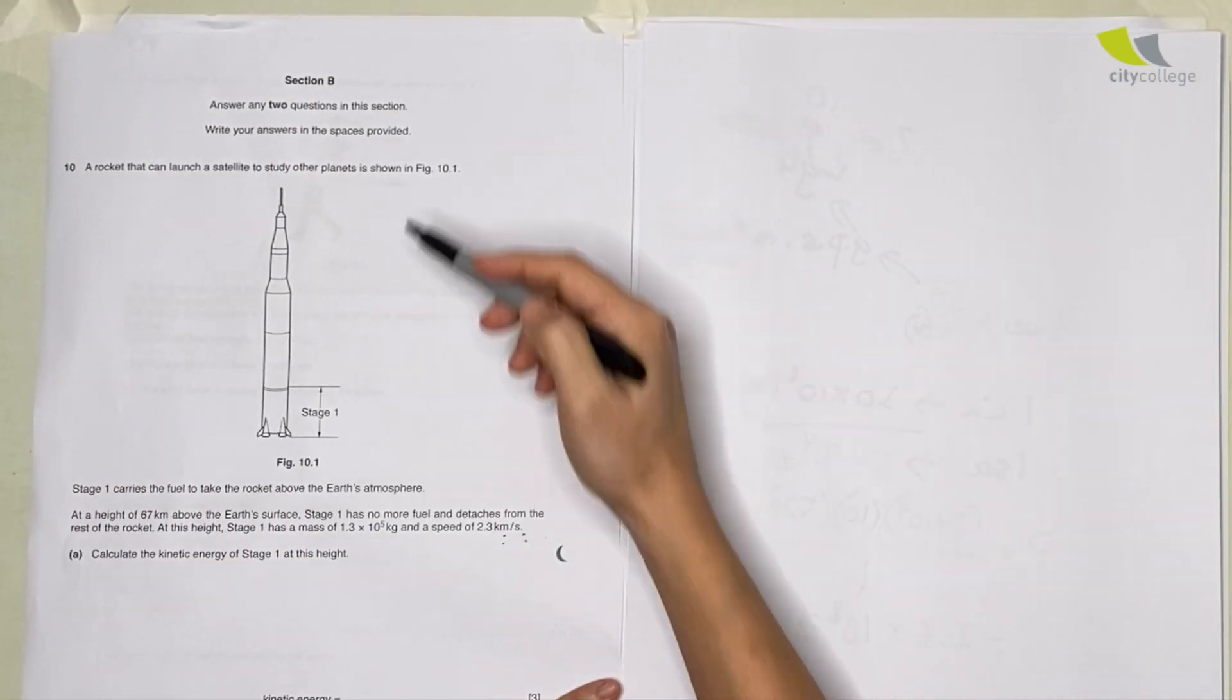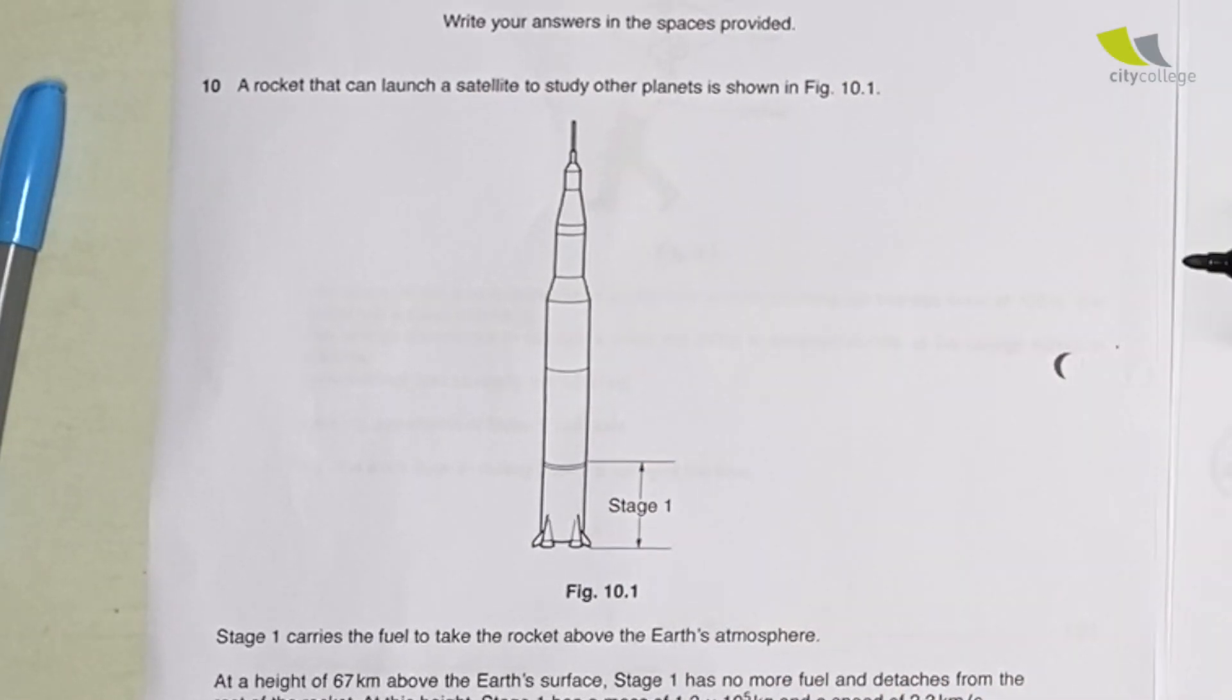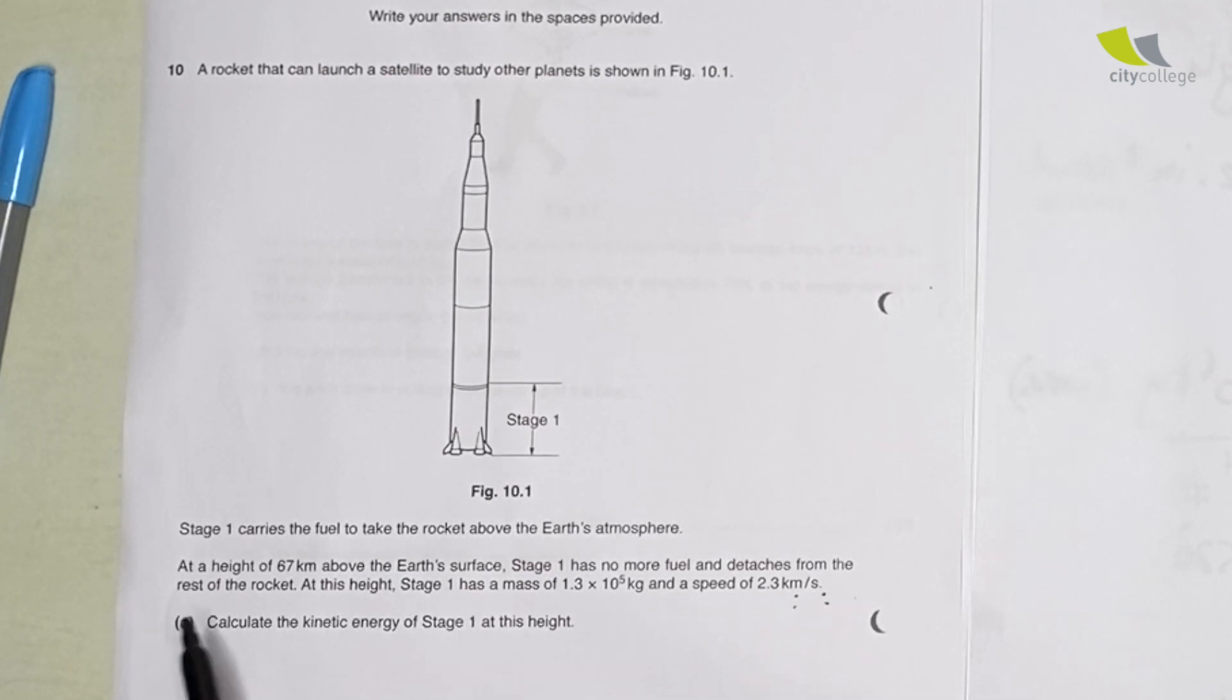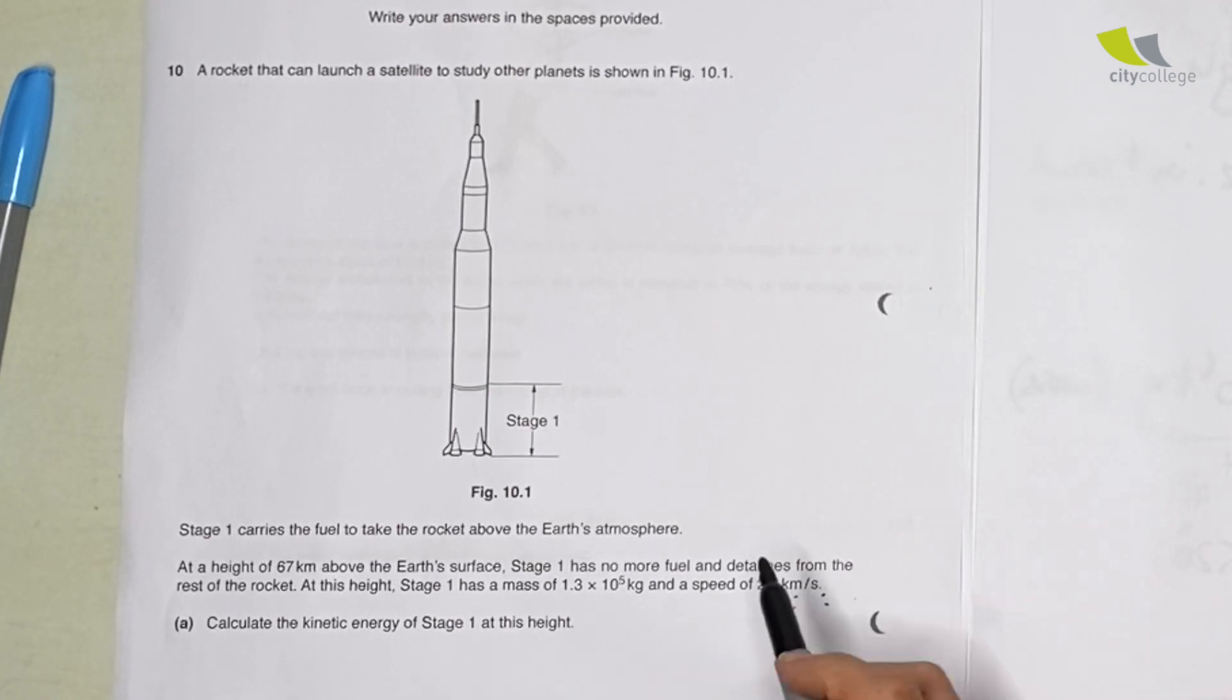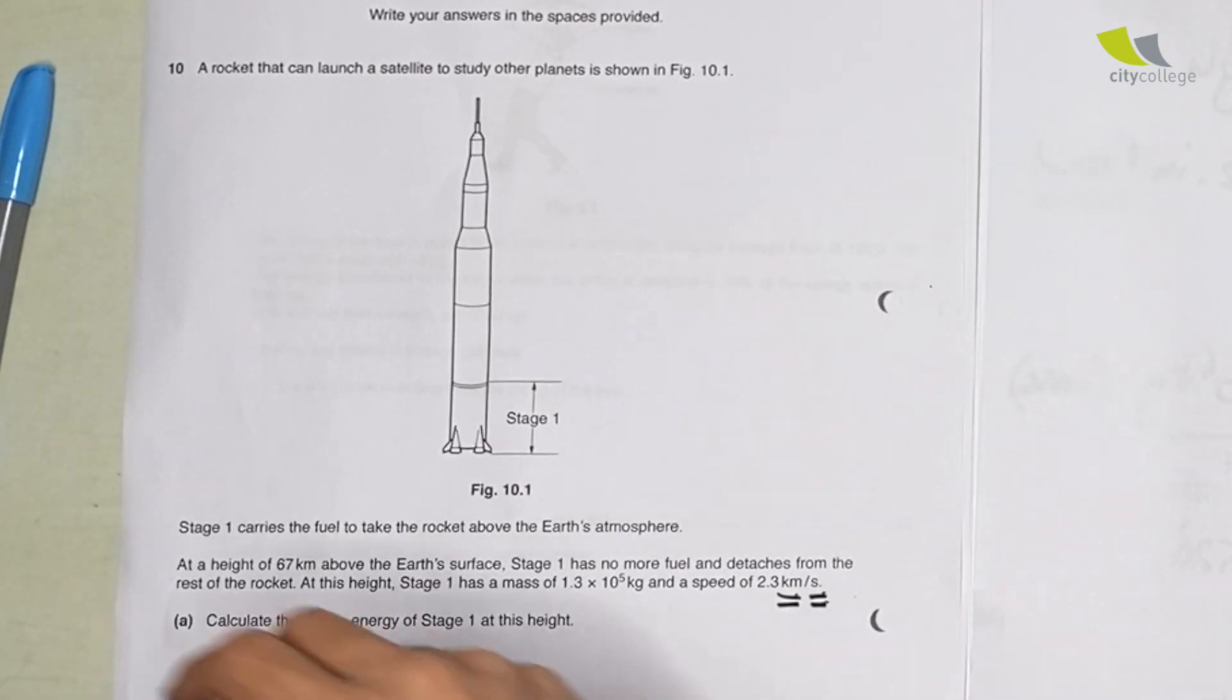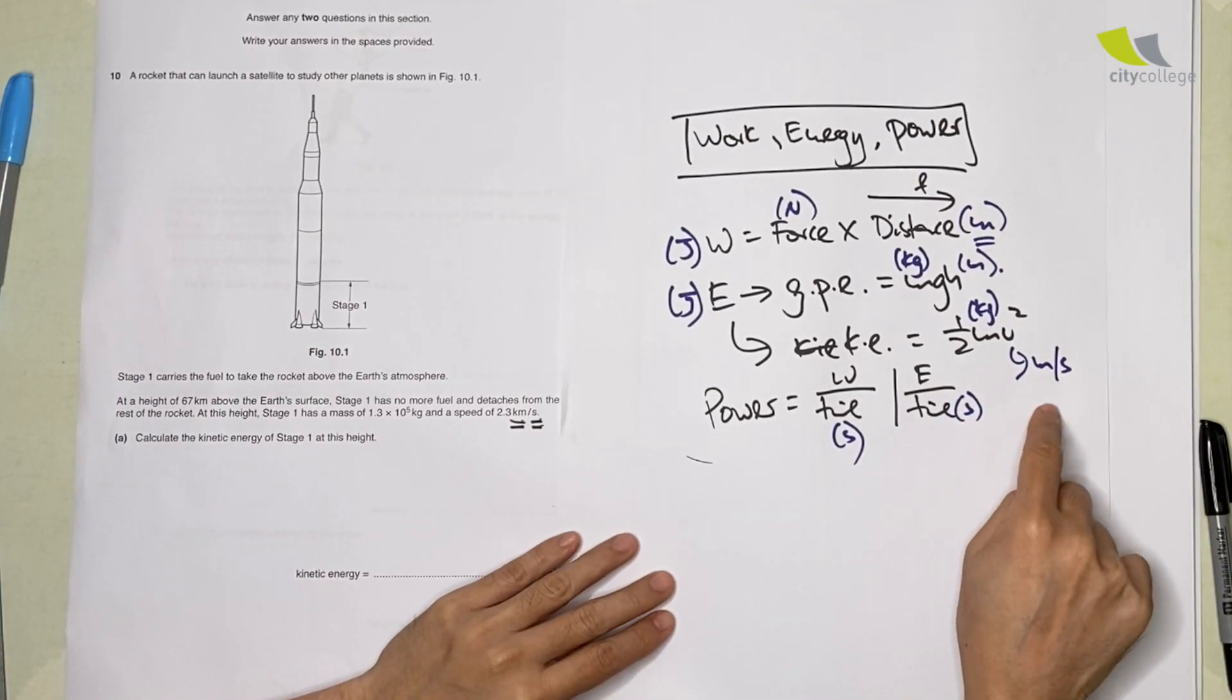2016 question: again, a lot of space for one big diagram of a rocket. Stage one carries the fuel to take the rocket above the earth's atmosphere at a height of 67 kilometers. Stage one detaches at this height with a mass of 1.3 times 10 to the 5 kg and a speed of 2.3 kilometers per second. Again, what did we say for units? In this case, for speed, we need meters per second, so we need to convert.